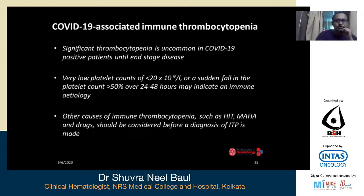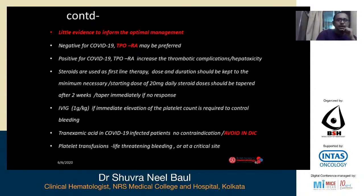The talk would not be complete without discussing COVID-19 associated immune thrombocytopenia. Significant thrombocytopenia is uncommon in COVID-19 patients until end-stage disease. A very low platelet count of 20,000 or a sudden fall of more than 20–50% over 24 to 48 hours may indicate an immune etiology. Other causes such as HIT (heparin-induced thrombocytopenia, since heparin is used as a procoagulant), MAHA, and drug-induced thrombocytopenia must be considered. If the patient is COVID-19 negative, TPO receptor agonists may be preferred; if COVID-19 positive, TPO receptor agonists are less preferred due to risk of DVT and hepatotoxicity. Safe agents include IVIG and tranexamic acid; platelet transfusions can be given in life-threatening bleeding. If steroids are used, start at a low dose of 20 mg because of immunosuppressive properties.